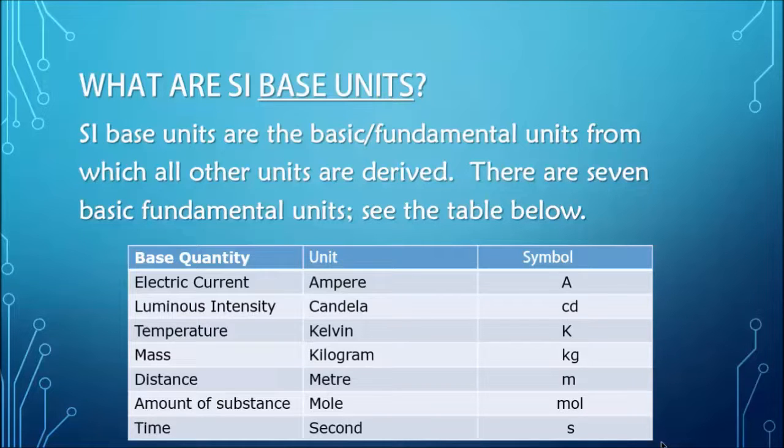So for example, electric current - the unit is ampere and its symbol is a capital A, and distance is meters and its symbol is M. So this is a table which outlines the seven basic fundamental units and their associated units and symbols.